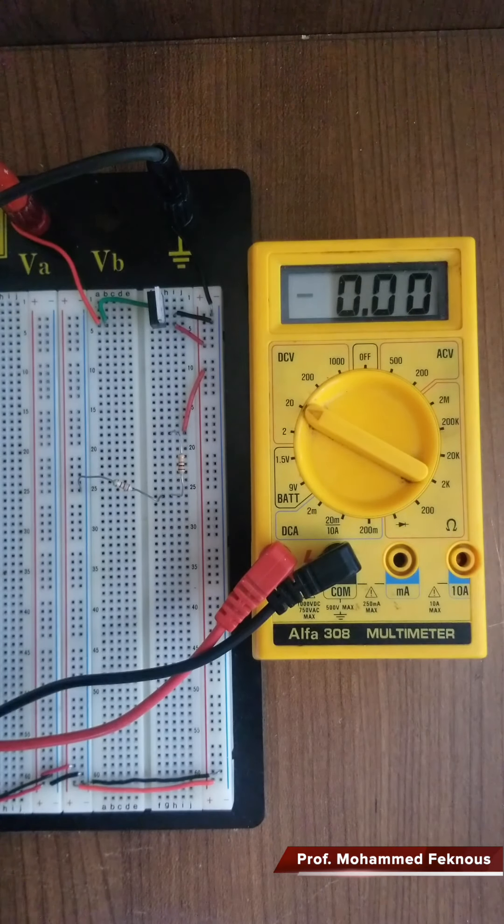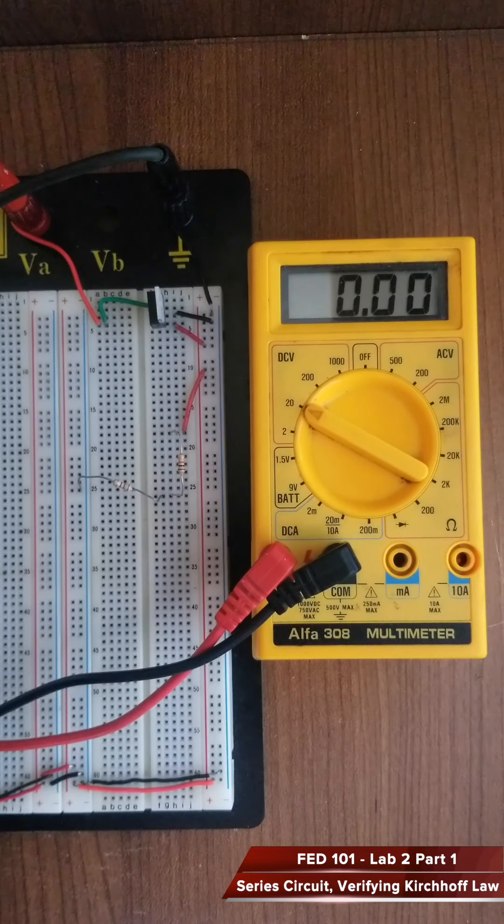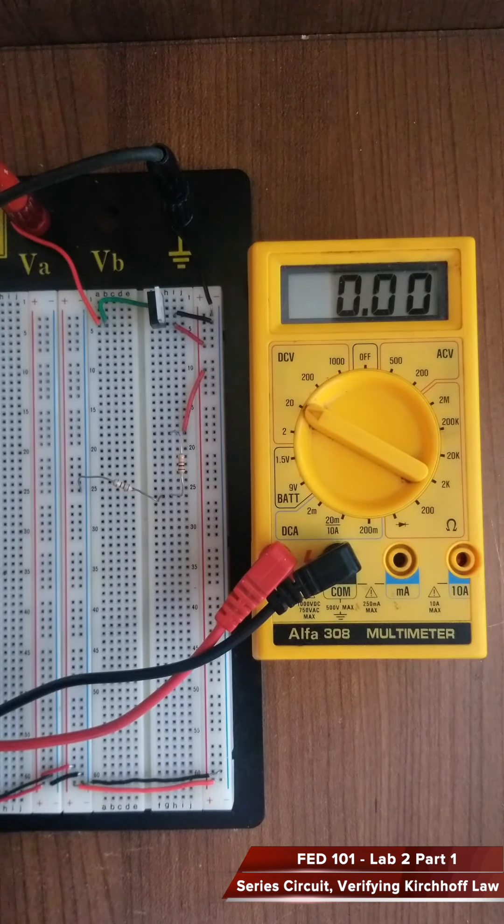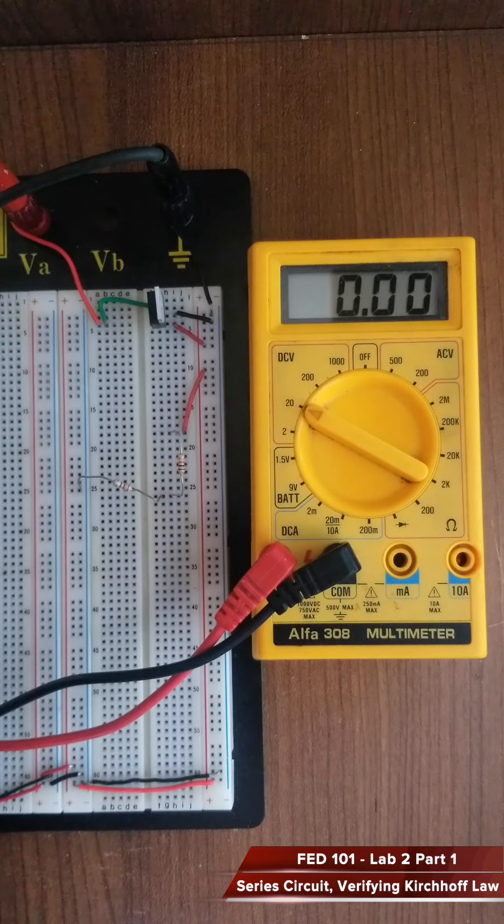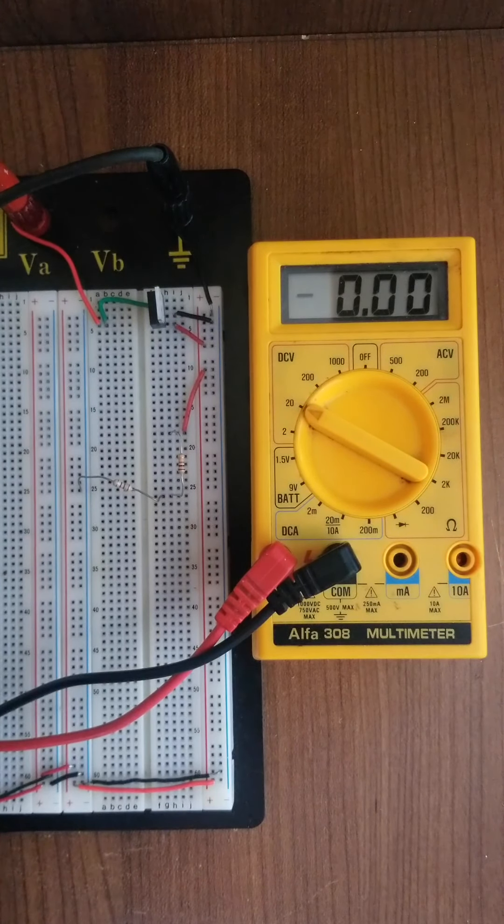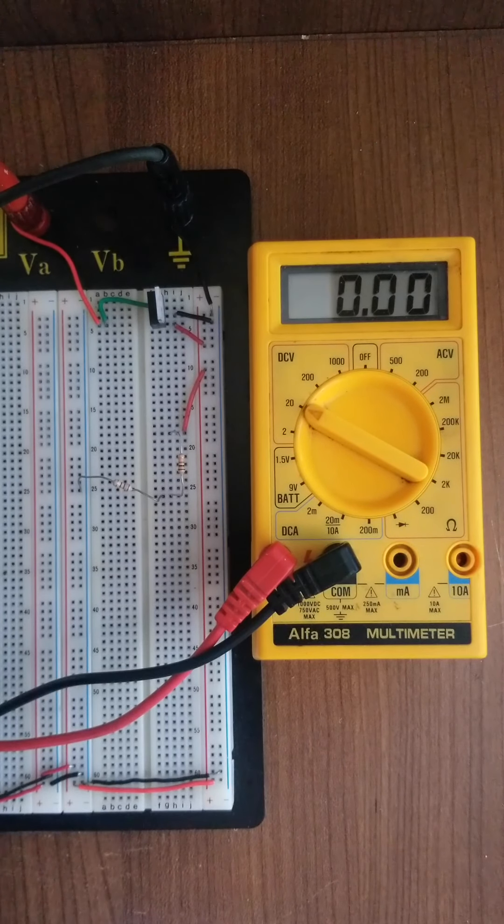Hello, this is the first part of lab 2 which is about building a series resistive circuit to confirm Kirchhoff's voltage law which says that the voltage across the battery is the sum of the voltage drops across the two resistors.